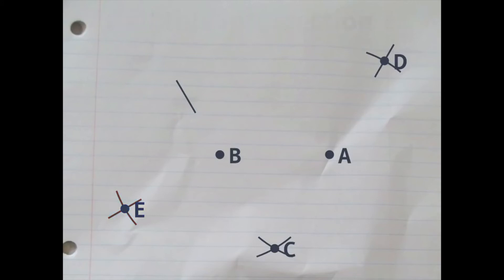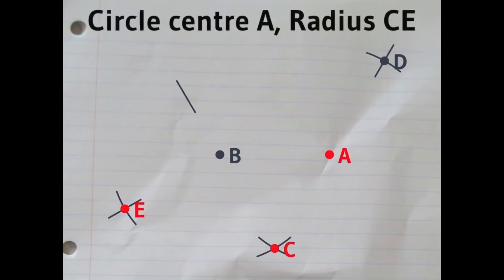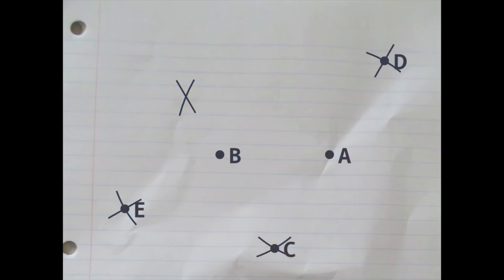Now, get your compass, set the radius to the distance between C and E, and draw a circle centred on A. And that will cut that straight line at a brand new point. We'll call that point F.